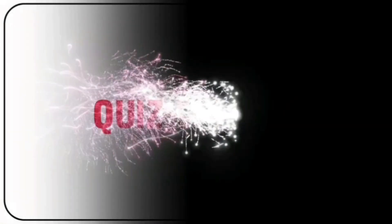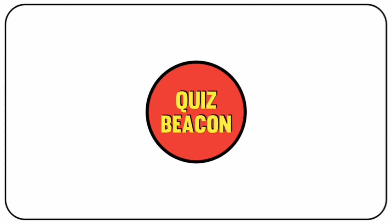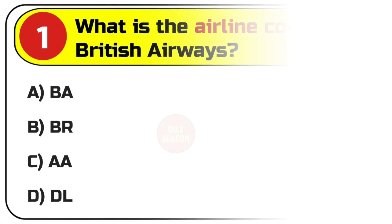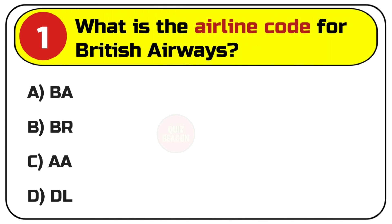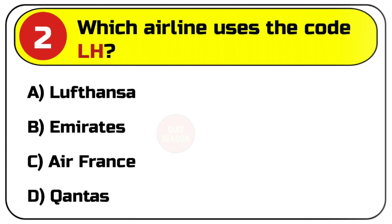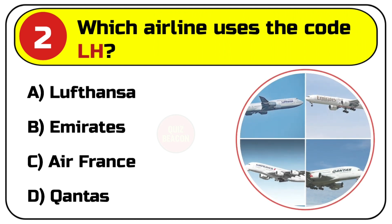Welcome to Quiz Beacon. There will be 20 questions, 5 seconds to answer. Let's begin. Question number one: what is the airline code for British Airways? Options are A. BA, B. BR, C. AA, D. DL. Correct answer is A. BA.